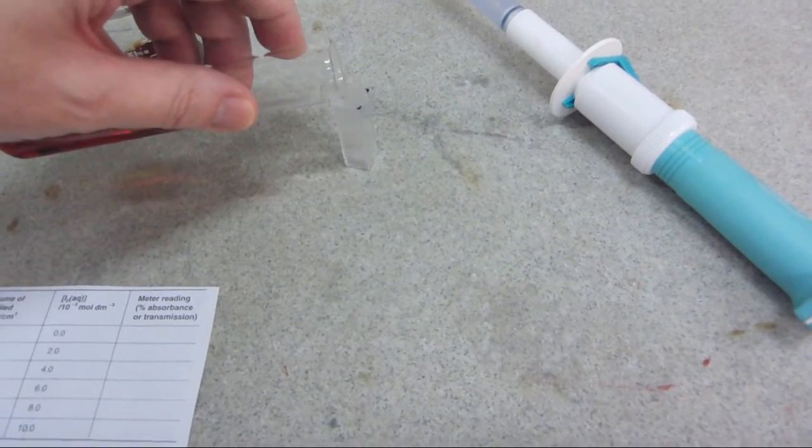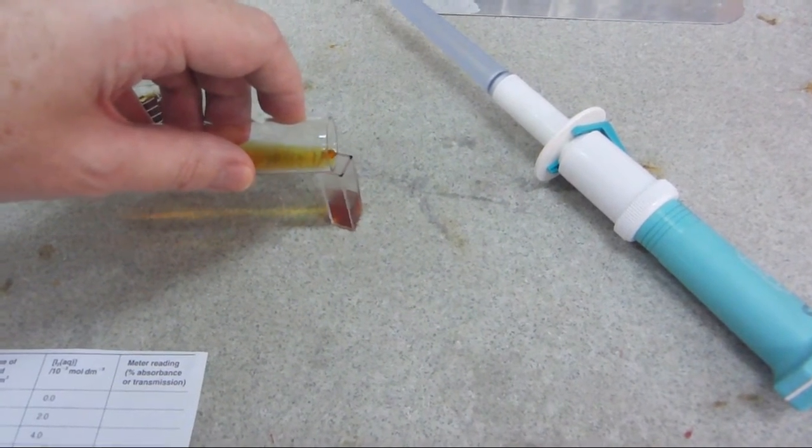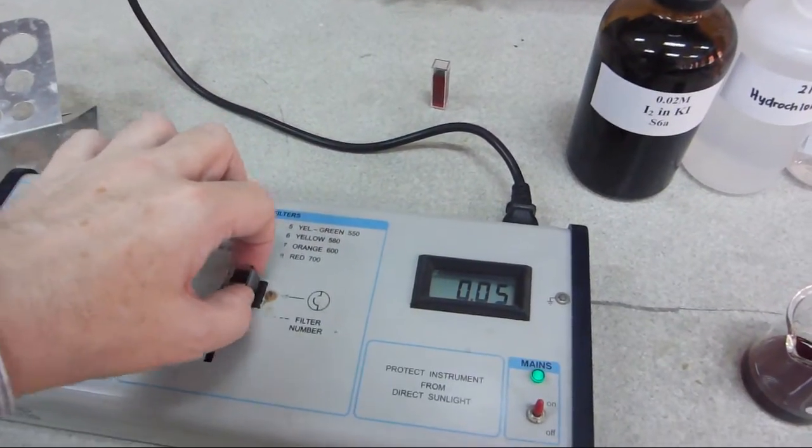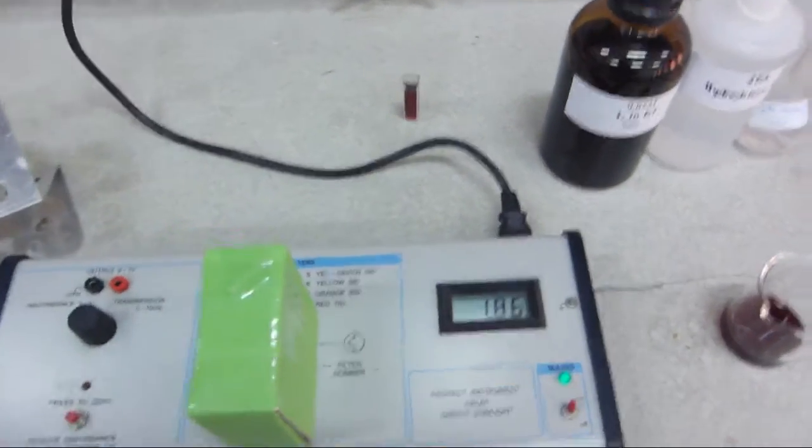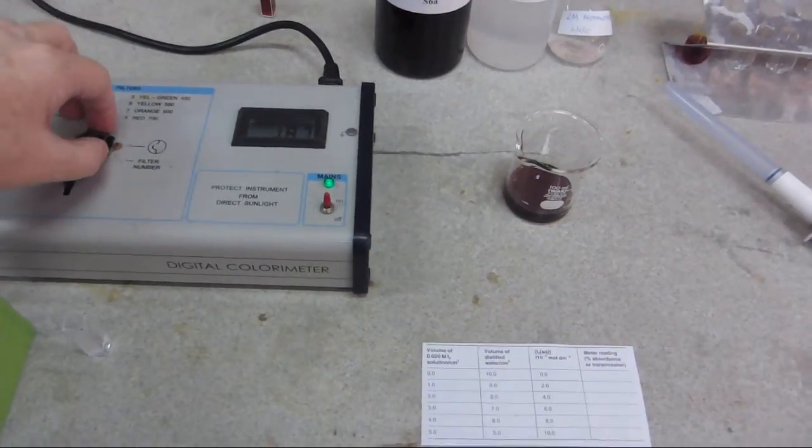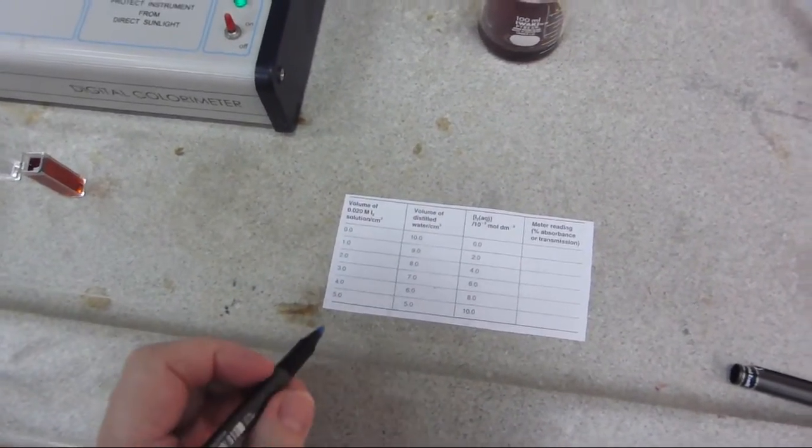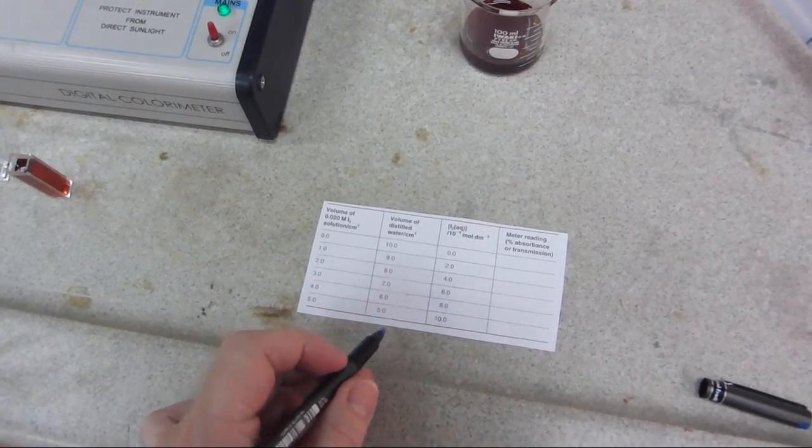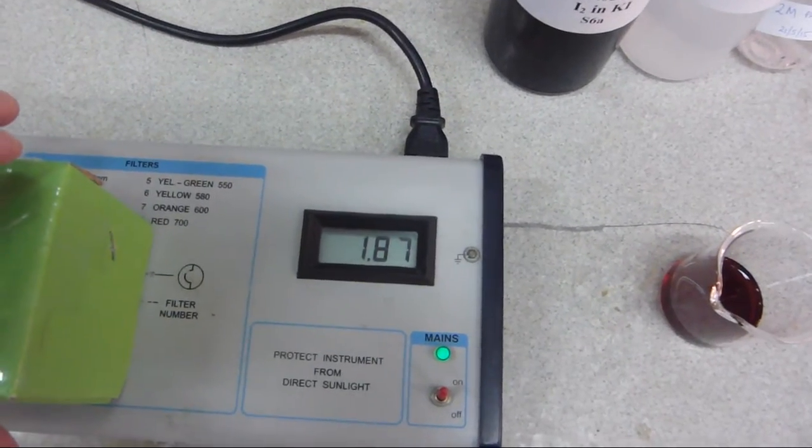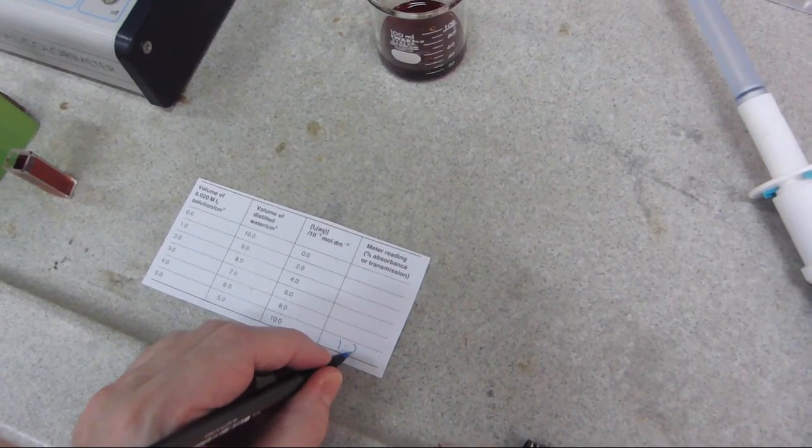I haven't got a pipette, so I'll attempt to pour this in. As long as I don't spill any down the side of the cuvette, we'll be fine. Success. Place that in the colorimeter, extinguish the extraneous light, and you can see that the reading is 1.86, 1.87 absorbance units, so it is on scale. Now I need to record that in the table of results. For five centimeters cubed of the 0.02 molar iodine plus five centimeters cubed of distilled water, we've got a reading of 1.87. My writing with my left hand, none too clear.